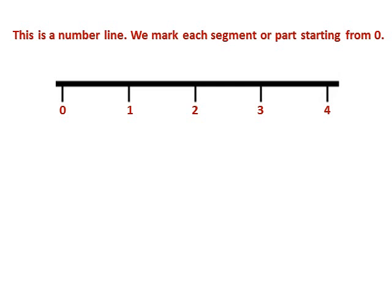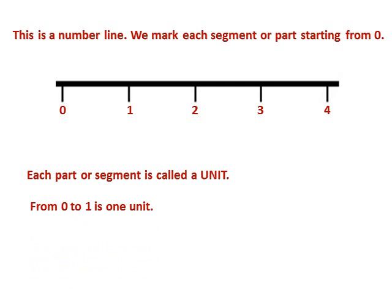And if it's longer, you mark five, six, seven, and so on. Each part is called a unit. A unit can be in meters, centimeters, inches, or feet — a unit is a universal name for measurements. So from zero to one, that is considered one unit. From one to two, also called a unit. Three to four, that's another unit. Each unit is equal to each other.